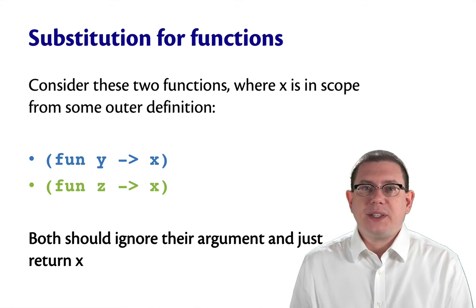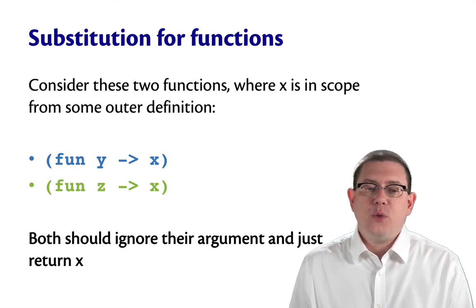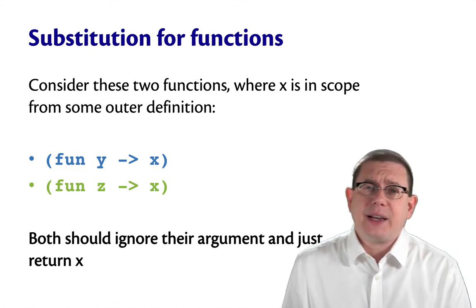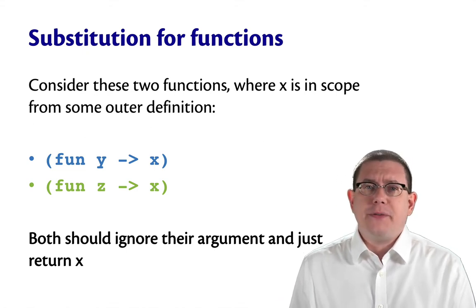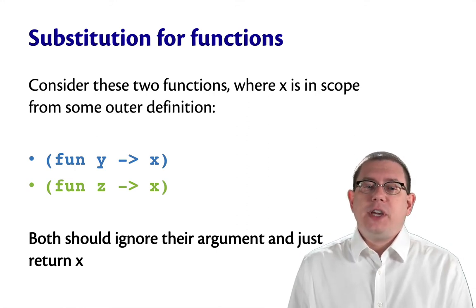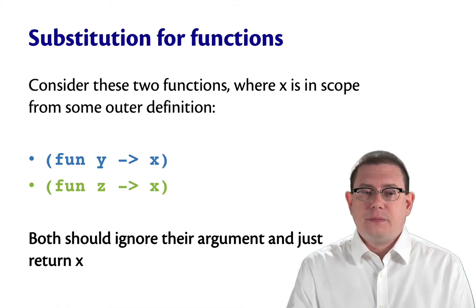Well, let's look at how this works out when we try it with two little functions. I've got fun y arrow x and fun z arrow x. Let's suppose that x is already in scope from some outer definition that I'm just not showing. Obviously, both of these should just return x, whatever x happens to be.